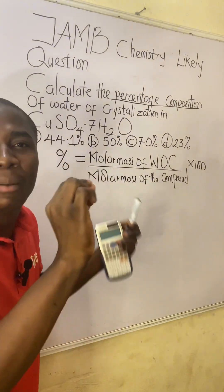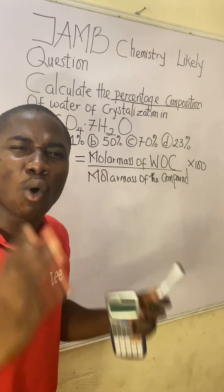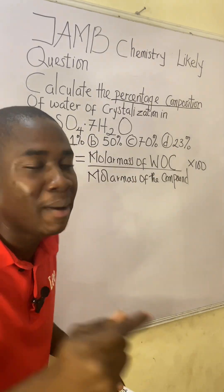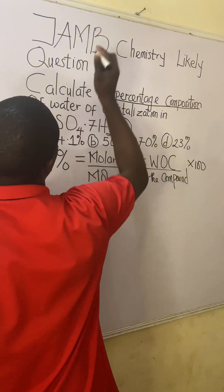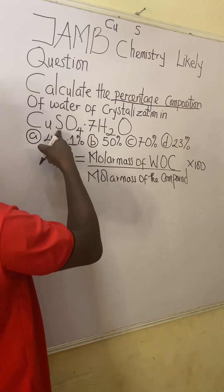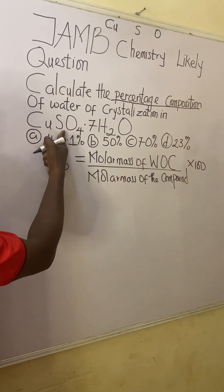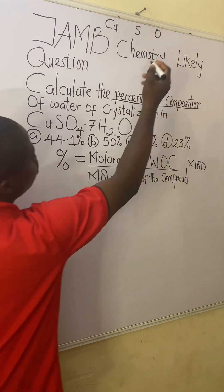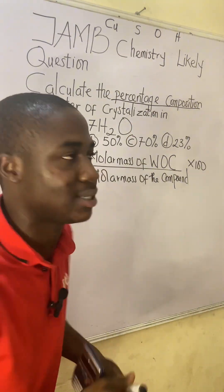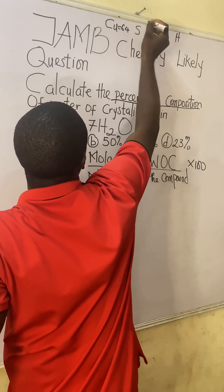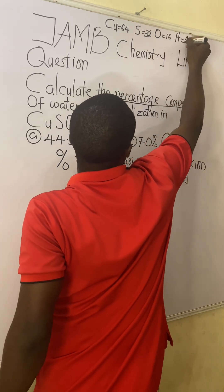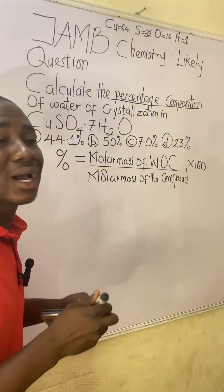The next step is to identify the elements that make up this compound. The first element is copper, then sulfur, then oxygen, then hydrogen, and finally oxygen again. Their atomic masses are: copper = 64, sulfur = 32, oxygen = 16, and hydrogen = 1.